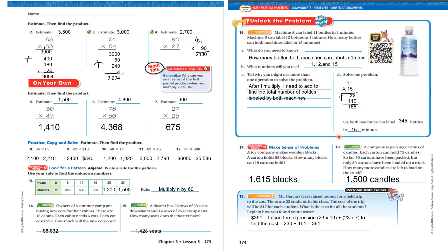Let's look at 18. A company is packing cartons of candles. Each carton can hold 75 candles. So far, 50 cartons have been packed, but only 30 cartons have been loaded on a truck. How many more candles are left to load on the truck? I'd have to take 50 times 75 candles to find out how many have been packed. But there's only 30 cartons so far. 30 times 75. 75 times 50, 75 times 30. Subtract the two, and you're going to get 1,500 candles.